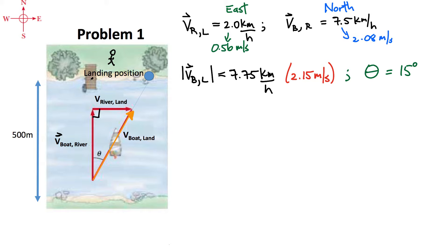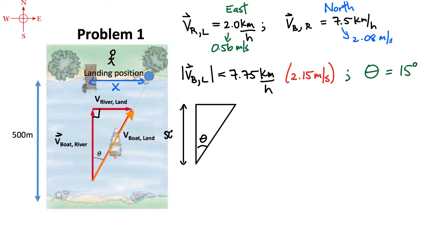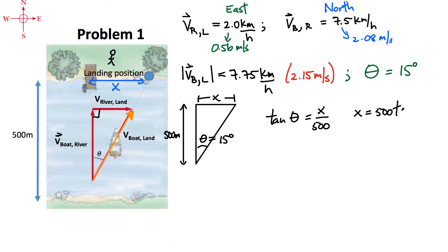Really what I wanted to find for this problem is how far did I drift — what is the distance x? One way to do this is to redraw the velocity triangle in terms of distances. I know the distance straight across the river is 500 meters, and the angle is 15 degrees. What I'm looking for is x, which is opposite that angle. Using tangent of theta again: tangent of 15° equals x over 500, so x equals 500 times tangent of 15°, which gives approximately 134 meters of downstream drift.